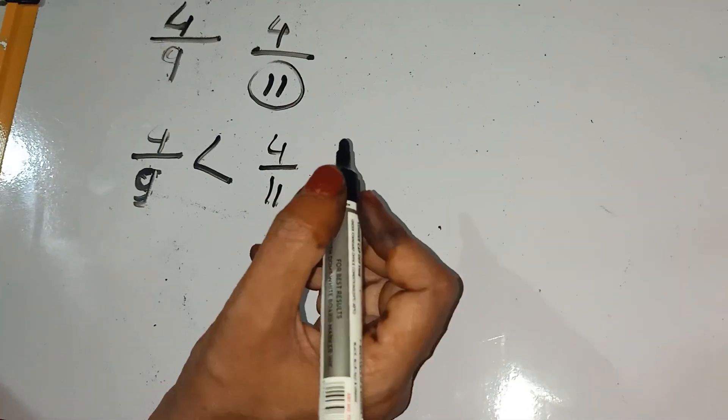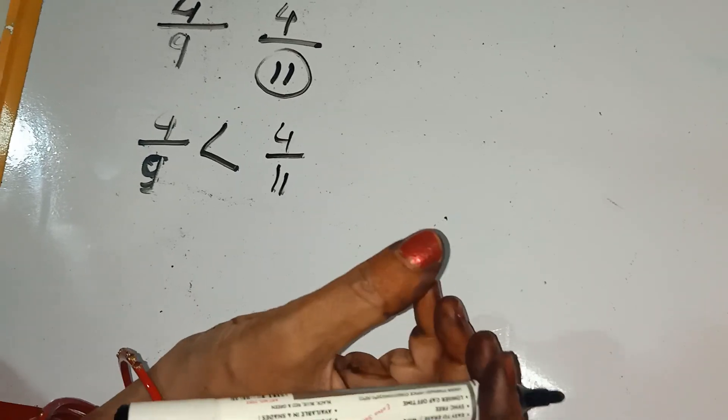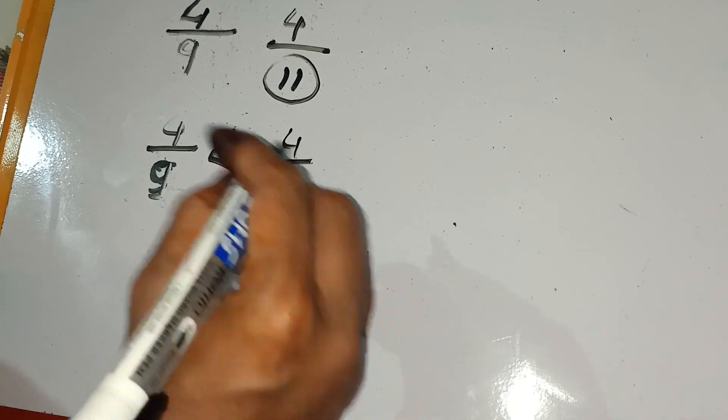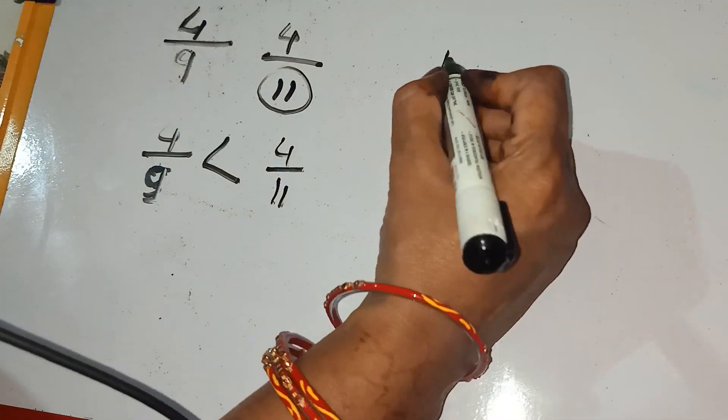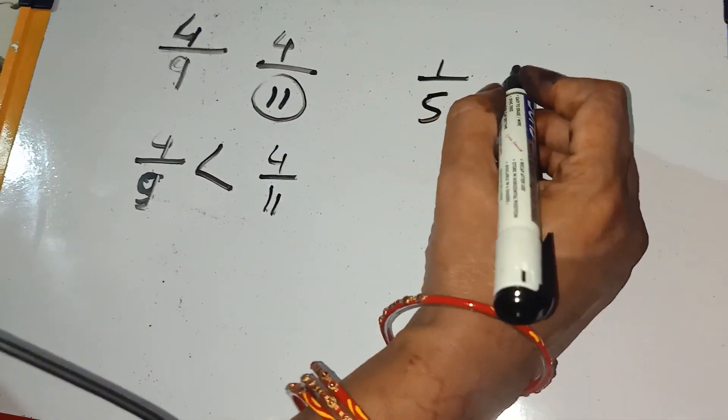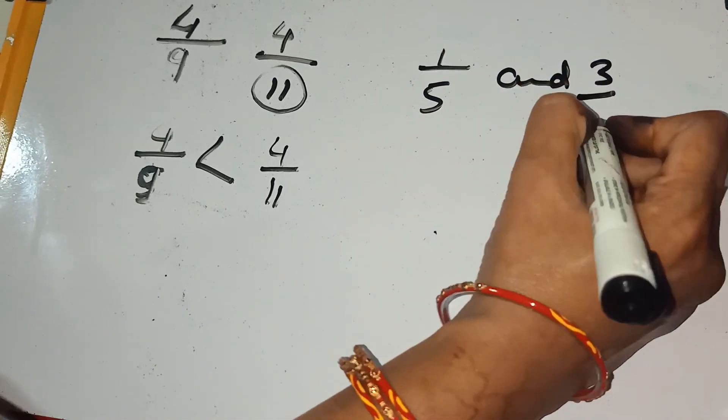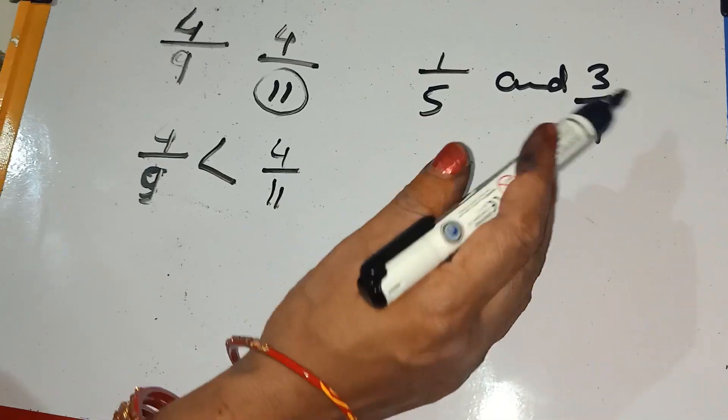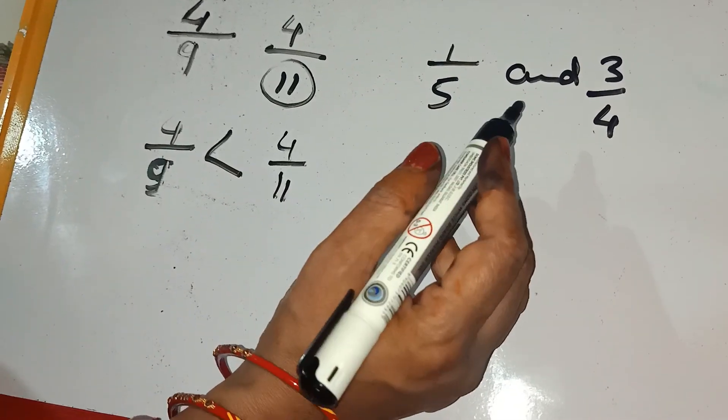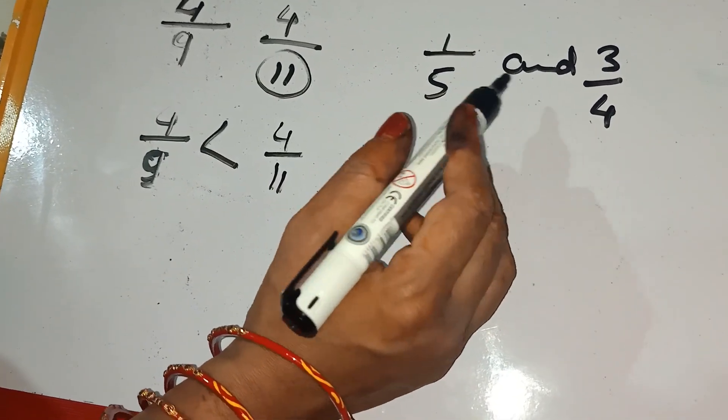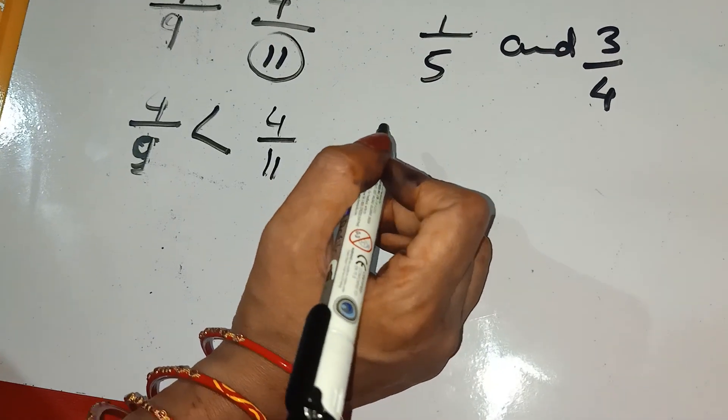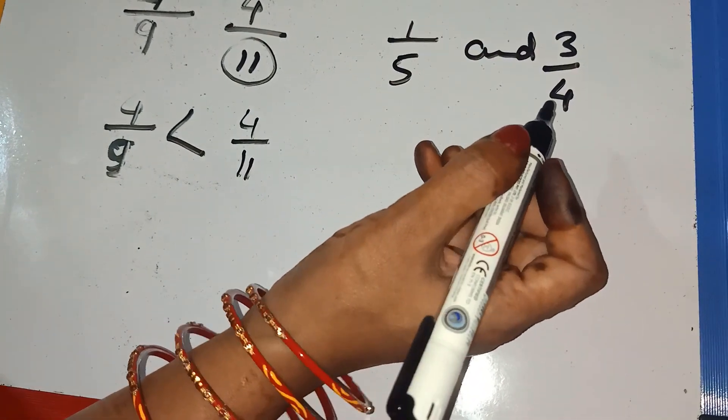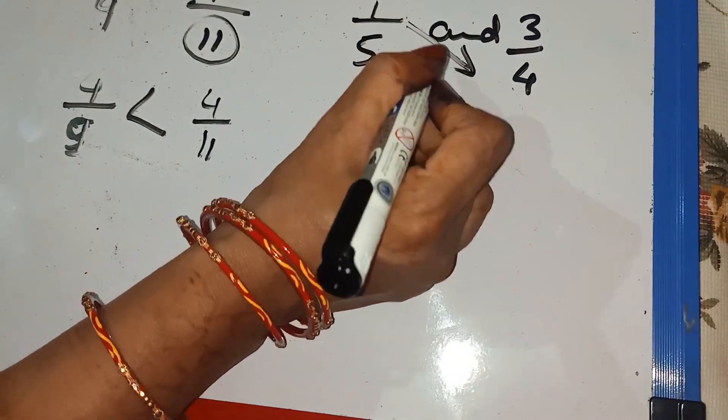If we are taking one small example, that is the numerator and denominator both are different. How can we do? Suppose I am taking a number 1 by 5 and 3 by 4. So, see in this sum, numerator and denominator both are different. And when both are different, how can we compare the two numbers? So, first we do cross multiplication.